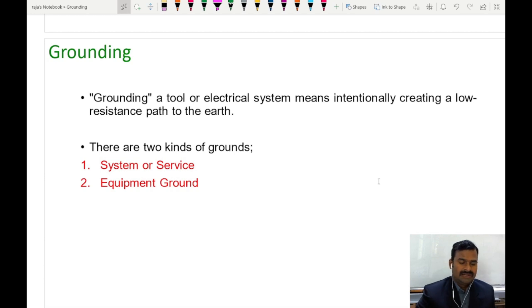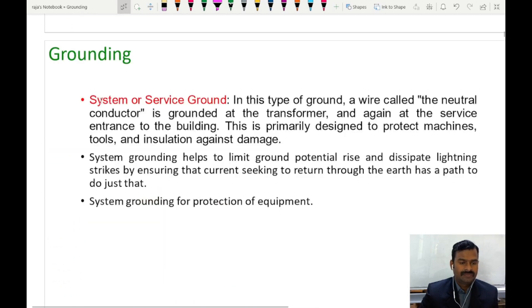So let us understand how this is being achieved. System or service ground. In this type of ground, a wire called the neutral conductor is grounded at the transformer and again at the service entrance to the building. This is primarily designed to protect machine tools and insulation against damages.